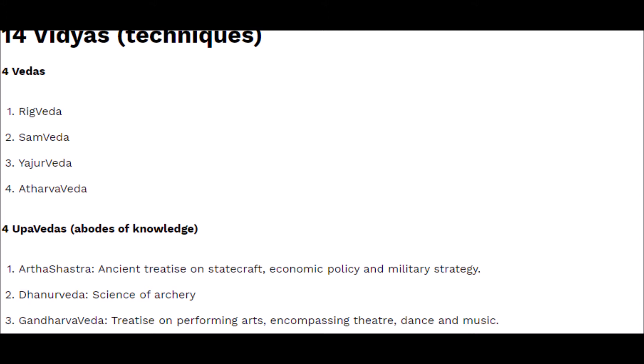The 14 Vidyas comprised of the four Vedas - Rigveda, Samveda, Yajurveda - and the four Upavedas, including the Artha Shastra, ancient treaties on statecraft, economic policy, and military strategy. These Artha Shastras are written from different perspectives - Chanakya's Artha Shastra is very different from others. Ravana also had written one, and the Kautilya Artha Shastra is the most popular one.